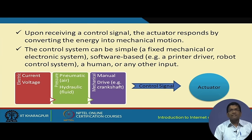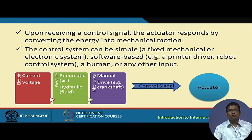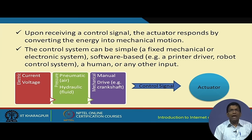When actuators receive a control signal, they respond by converting that energy into mechanical motion. The control system can be simple — mechanical or electronic — or software-based, like a printer driver, robot control system, or human input. There are three types of actuators: electric-based, pressure-based, and mechanical-based. Each receives control signals, based on which actuation is performed.